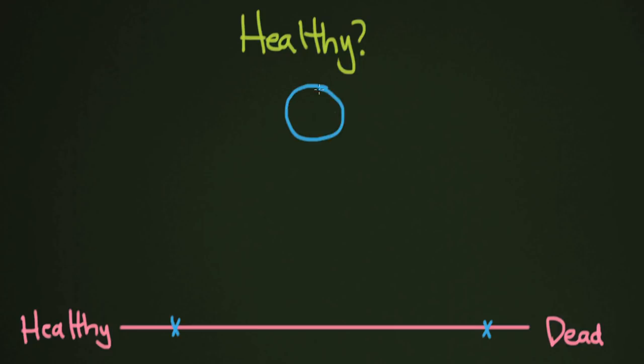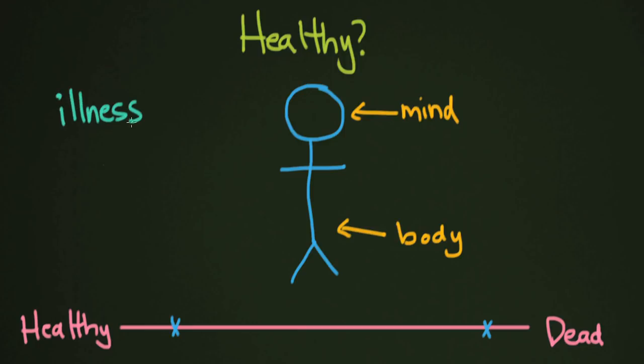To do that, let's draw our person here. I'm going to draw a blue person. There we go. And this blue person has a mind, has a body. And I think the best description that I've found of what a healthy person is, or the simplest, is the person who is free from illness, free from injury, and free from pain. So in both mind and body, they are free from illness, injury, and pain.